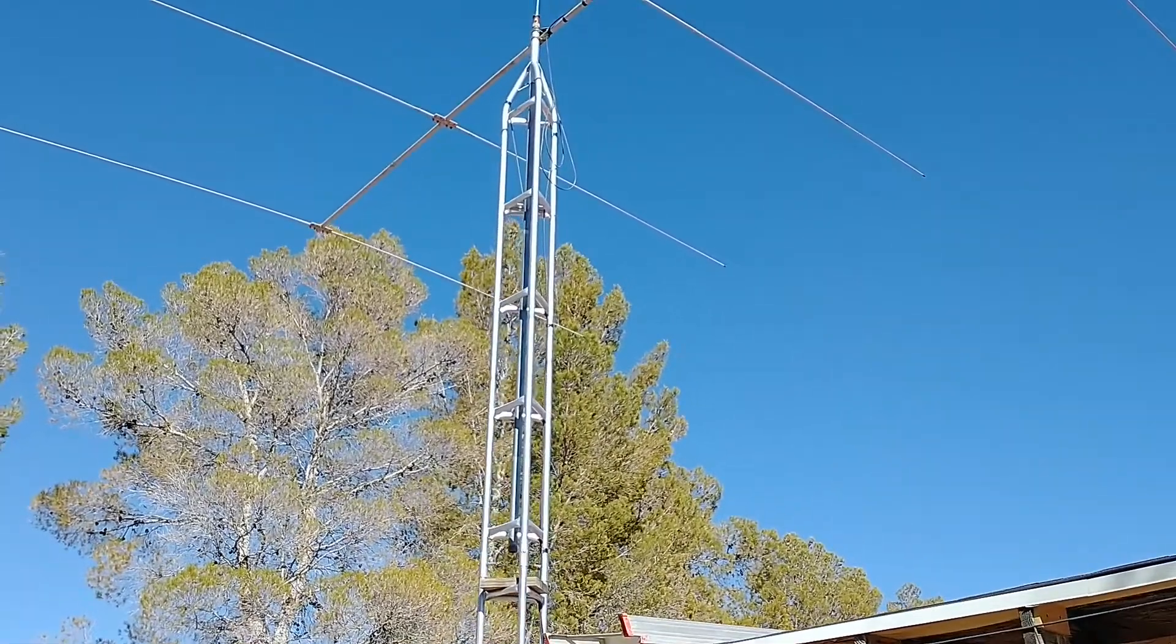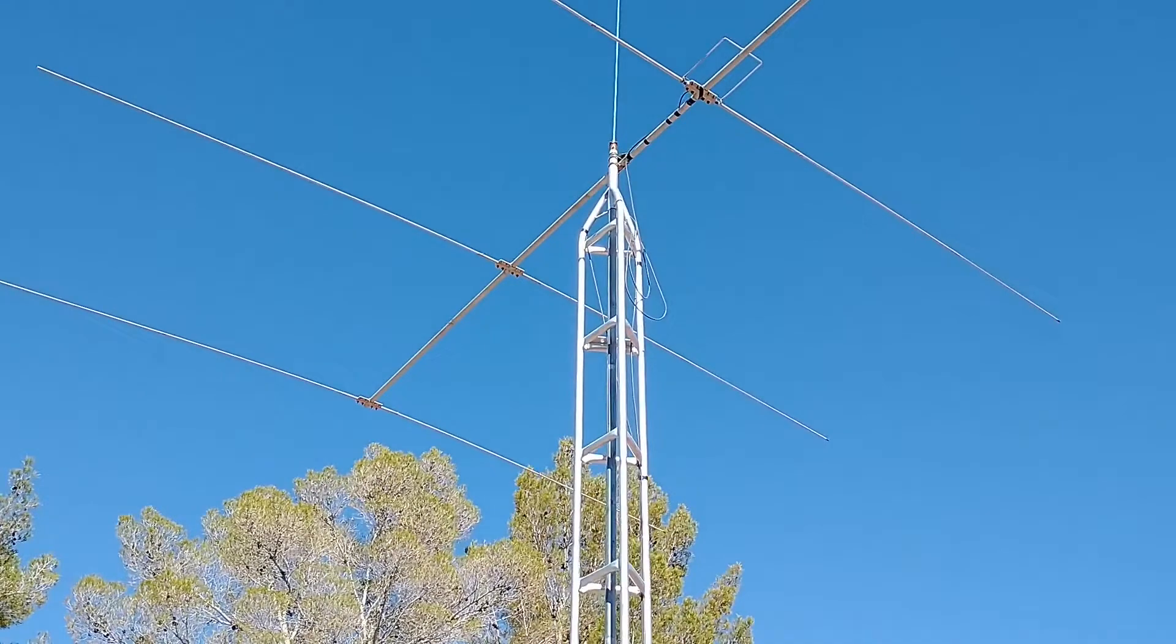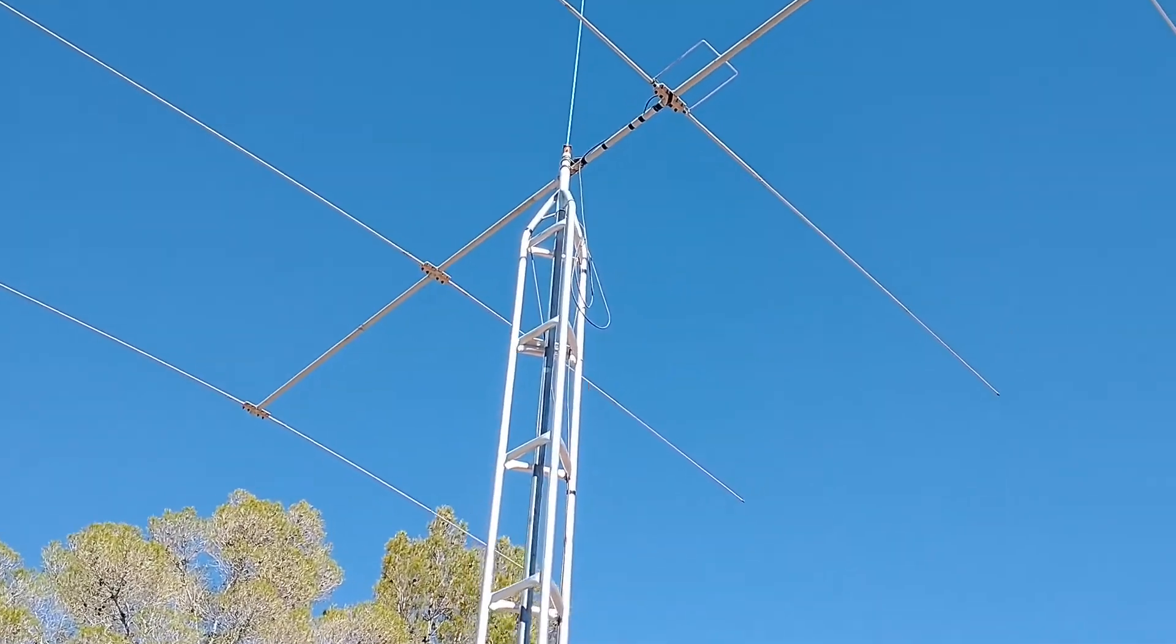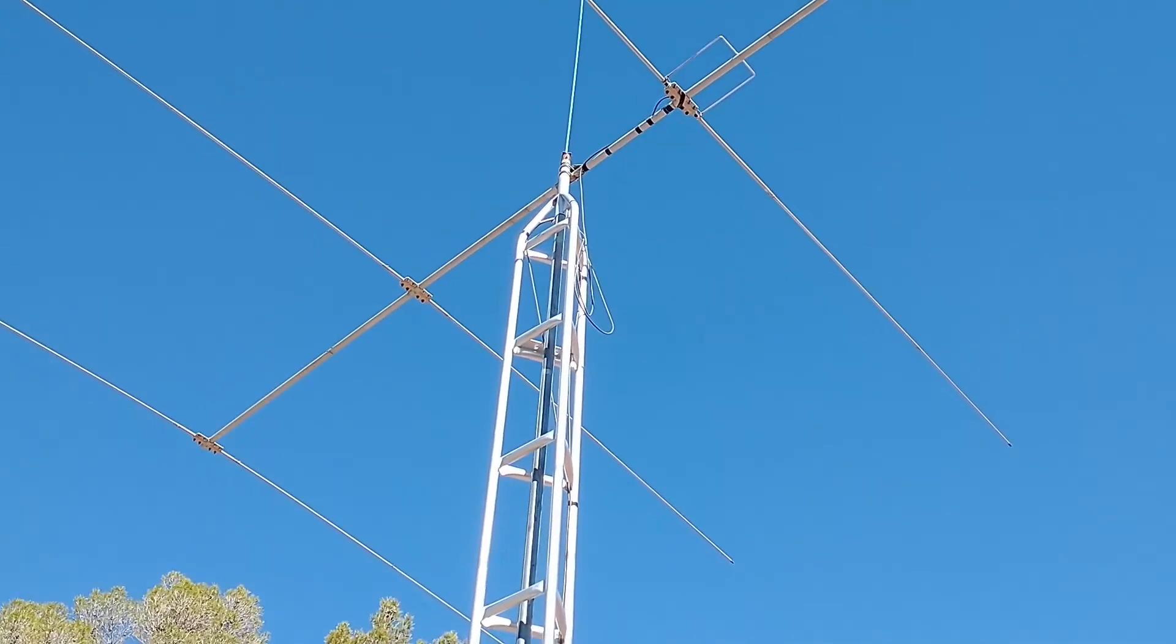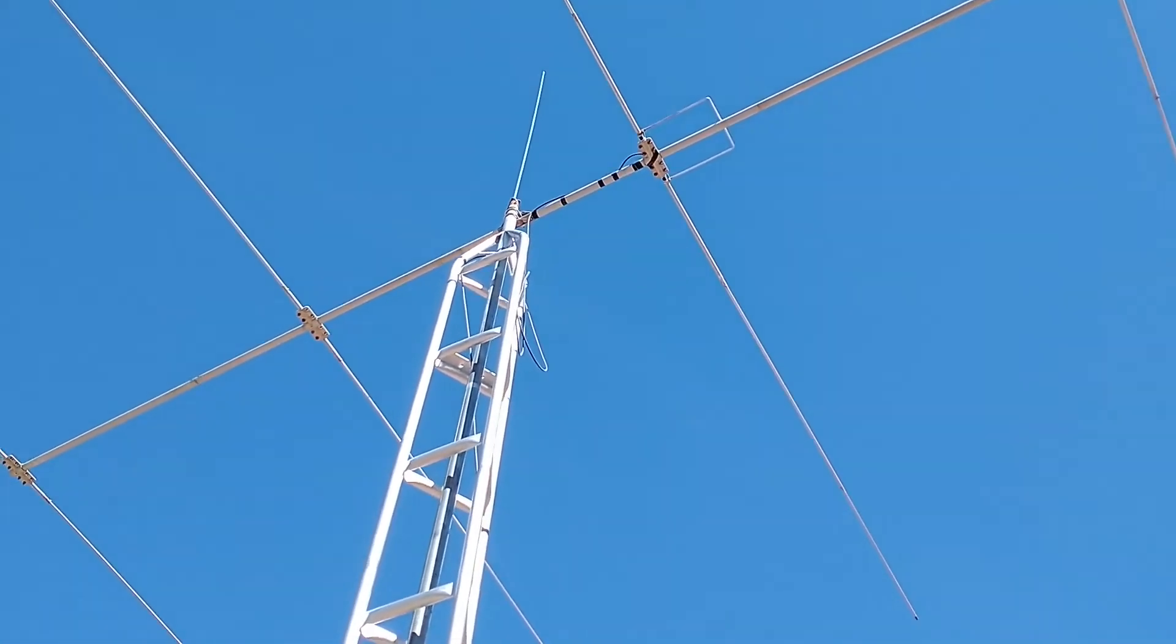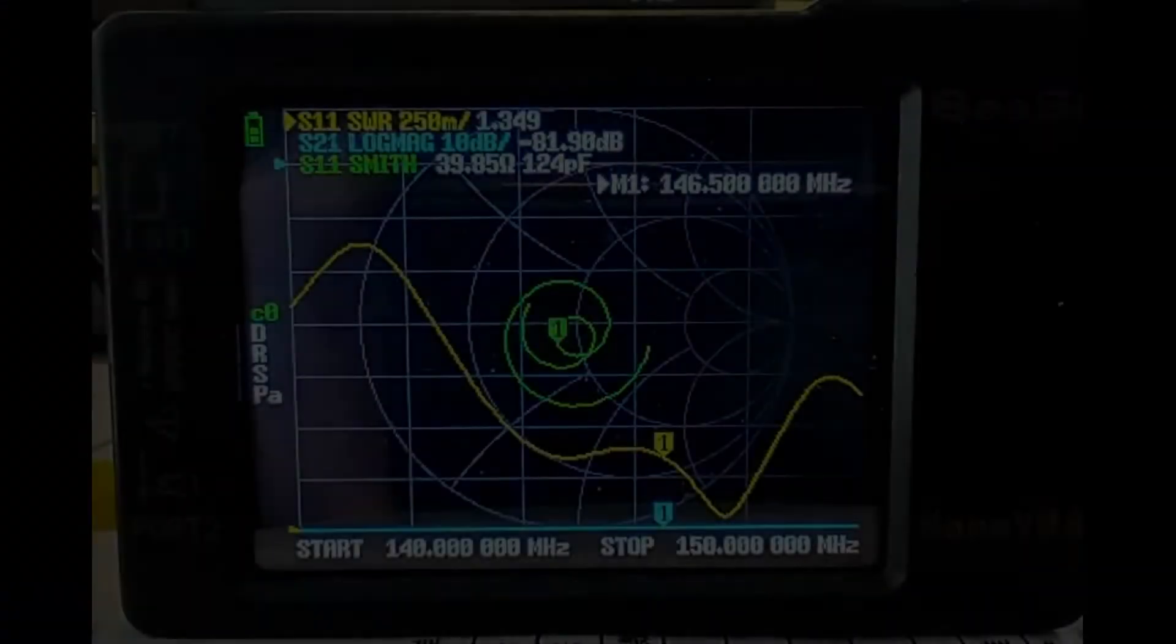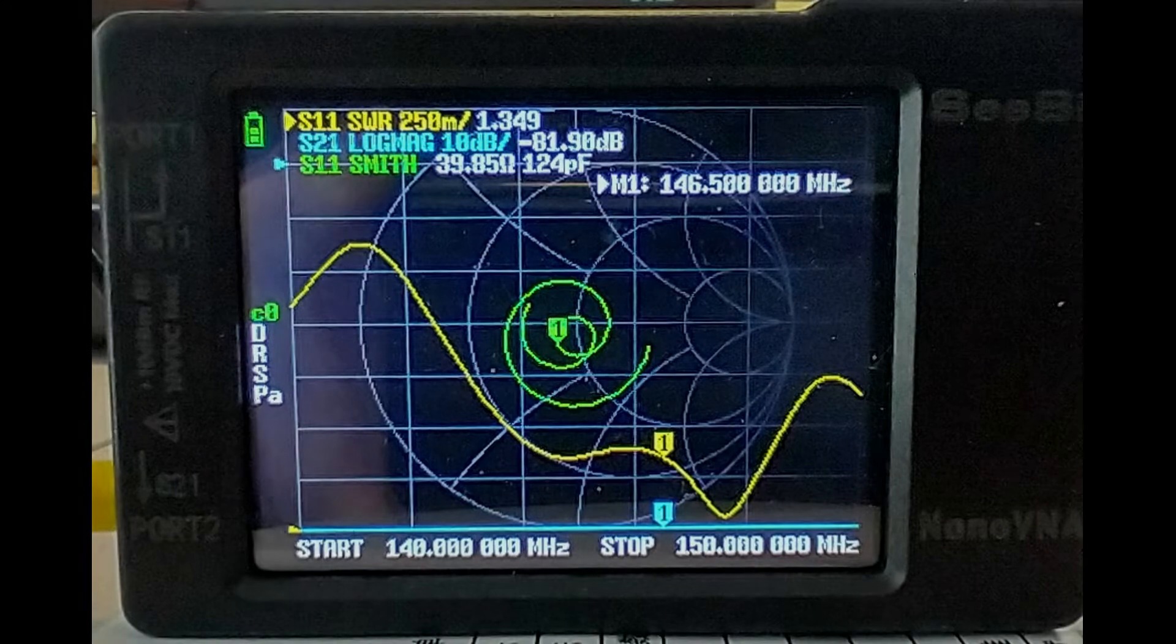I've already shortened all of the reflectors and directors on this beam to match what should be on a 10 meter Yagi but the driven element is just a little bit too long so follow along as I tweak that. I'm going to use a nano VNA to check my work and sit back and enjoy.